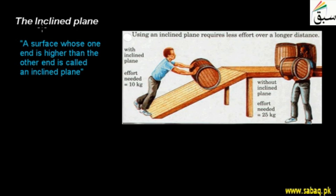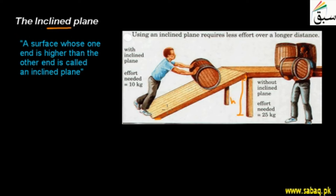Students, today our topic is inclined plane. We consider it a simple machine. If we define it simply in physics, we say that a surface that goes from one end to a higher level than the other end, we call it an inclined plane. In the figure, I have tried to show that we have a wooden log taken from one end to a higher level, and at the other end it touches the ground. So this machine we call an inclined plane, and we get benefit from it in our life.